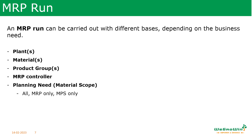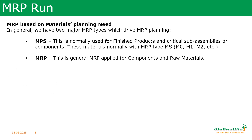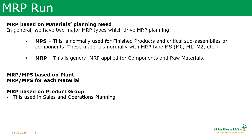MRP run can be carried out with different bases depending on the business need — like for a plant or combination of plants, material or combination of materials, for product groups especially for the SMOP process, MRP controller, and also the planning need. We have to run MRP only for MRP materials or MPS materials. MPS is used mainly for finished products, semi-finished products, or critical sub-assemblies, with MRP types M0, M1, M2, etc. MRP is the general planning applied for components with types like PD, P1, etc. MRP and MPS can be run based on plant, material, or product group.